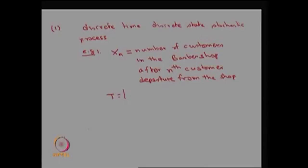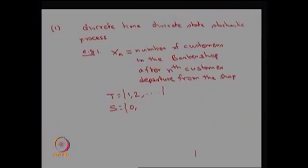The possible values of capital T will be 1, 2, 3 and so on, representing the number of customer departures. The possible values of Xn are: there is a possibility of no customers in the system when someone leaves, or one, or two and so on. Therefore capital S can be countably finite or countably infinite. In this case we assume it is countably infinite. Therefore both capital T and capital S are discrete.